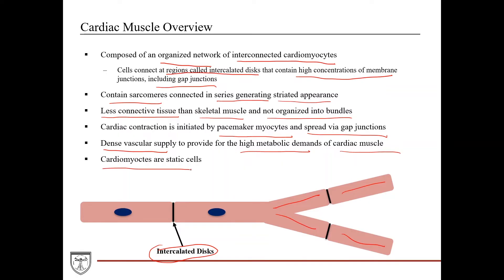The last thing here we'll point out is that cardiomyocytes are static cells, meaning they do not undergo cell division. They don't re-enter the cell cycle. So that's why a heart attack can be so devastating, because when you cut off perfusion and you have necrosis of cardiomyocytes, they don't come back.